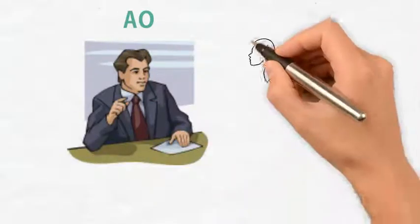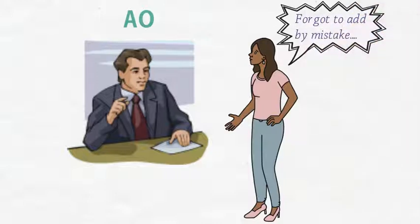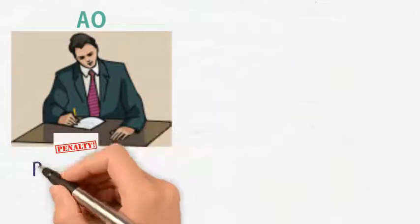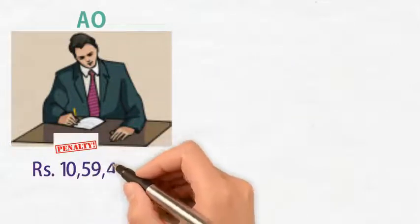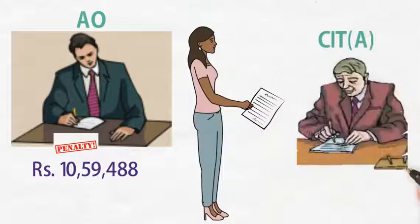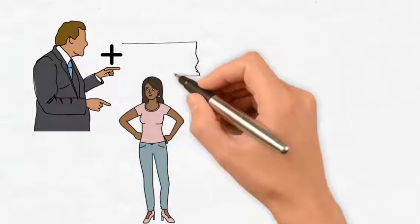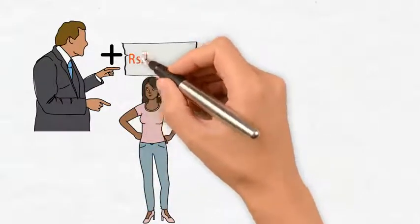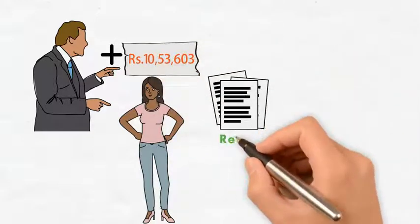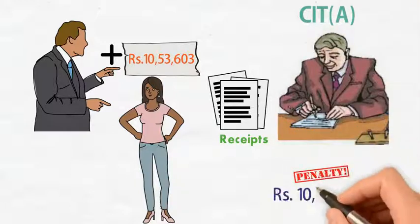The AO asked for an explanation. Jyoti said that she had forgotten to add it by mistake. The AO added it back to the income and imposed a penalty of Rs. 10,59,488. Jyoti filed an appeal with CIT Appeal. Jyoti's representative pleaded that she had added a part of this receipt — Rs. 10,53,603 — under miscellaneous receipts. CIT Appeal deleted the addition and the penalty was also deleted.